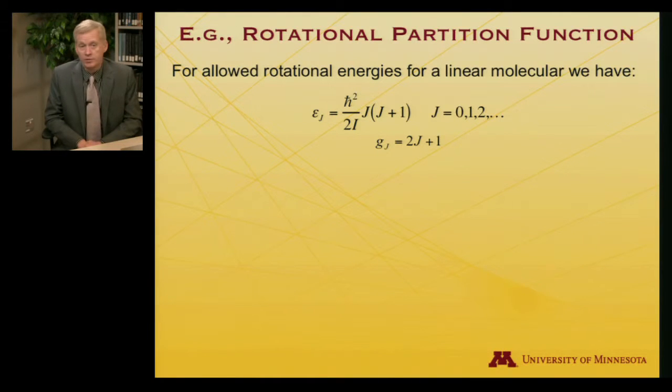So let's just do a particular example. If you recall from our looking at the solutions to various Schrodinger equations, the rotational partition function for a linear molecule, we found that the allowed energy levels are h-bar squared over twice the moment of inertia, and they're indexed by quantum number j, j times j plus 1. And j could take on values 0, 1, 2.